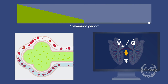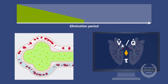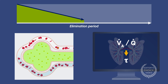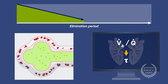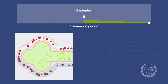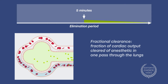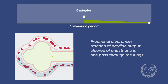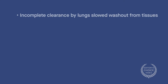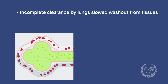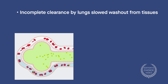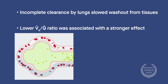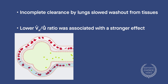For all VAQ levels, the alveolar partial pressure of anesthetic did quickly decrease. However, after five minutes, the fractional clearance of anesthetic reached a constant value that was maintained throughout the elimination period. Incomplete clearance of the drug by the lungs slowed washout from the tissues, and this effect was stronger at lower VAQs.